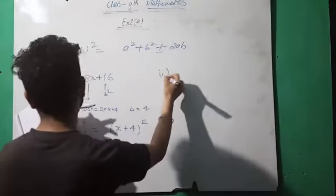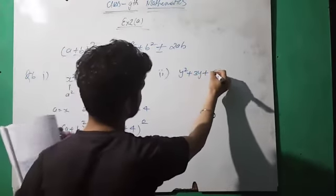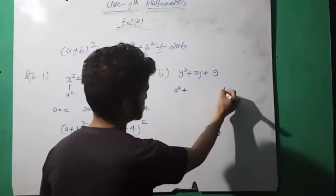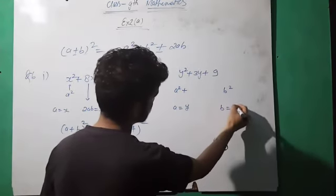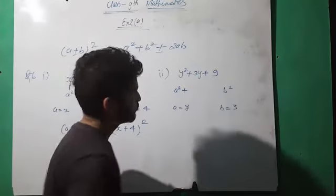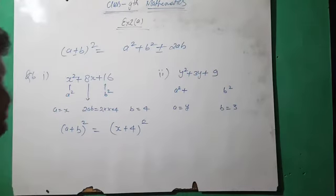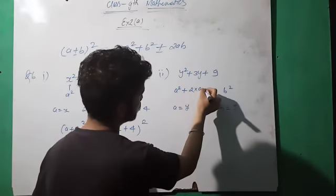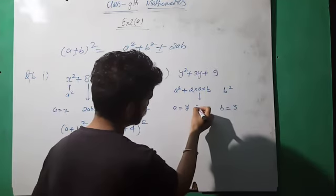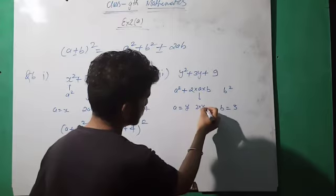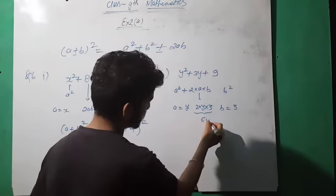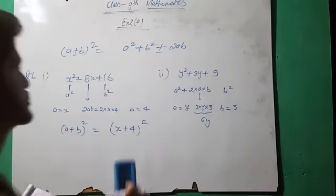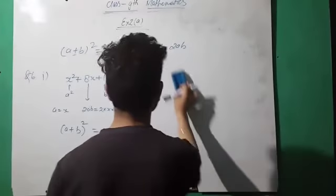Second part: y square plus 3y plus 9. Here a square means a equals y, and b square means b equals 3. Then 2ab must equal 2 into y into 3 equals 6y. But here we only have 3y, not 6y. So this is not in the form of a perfect square.